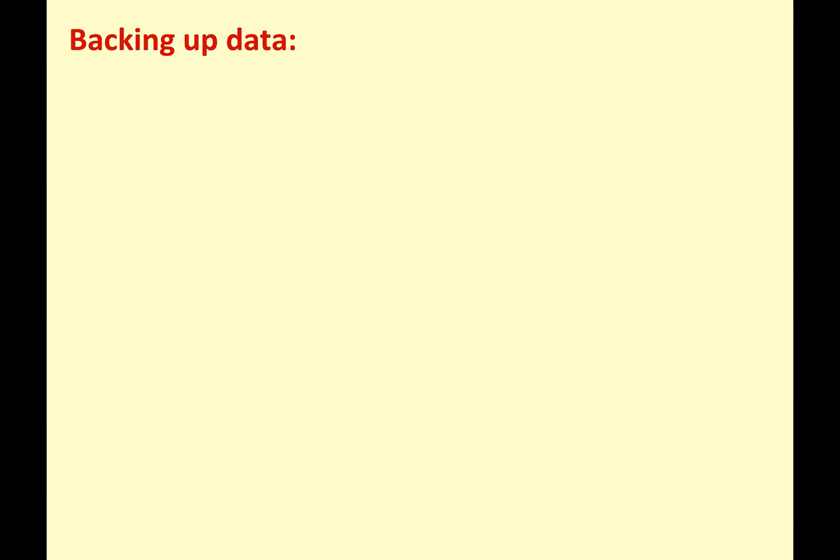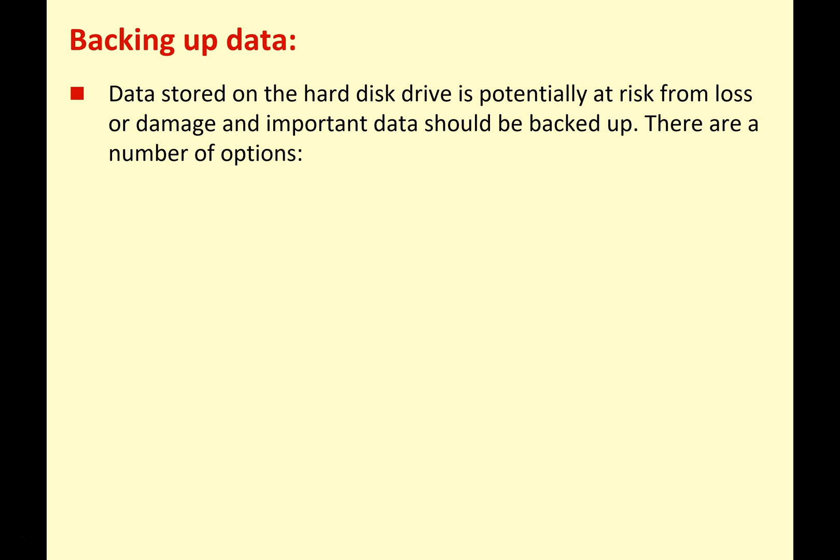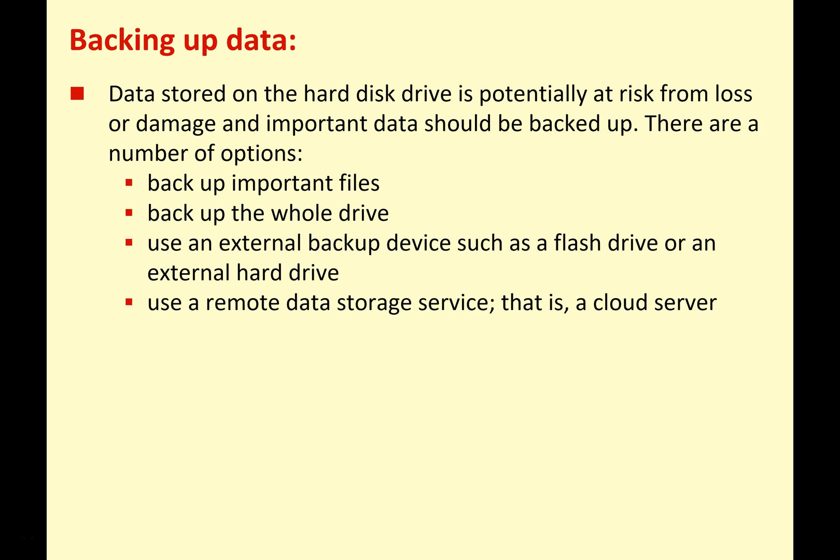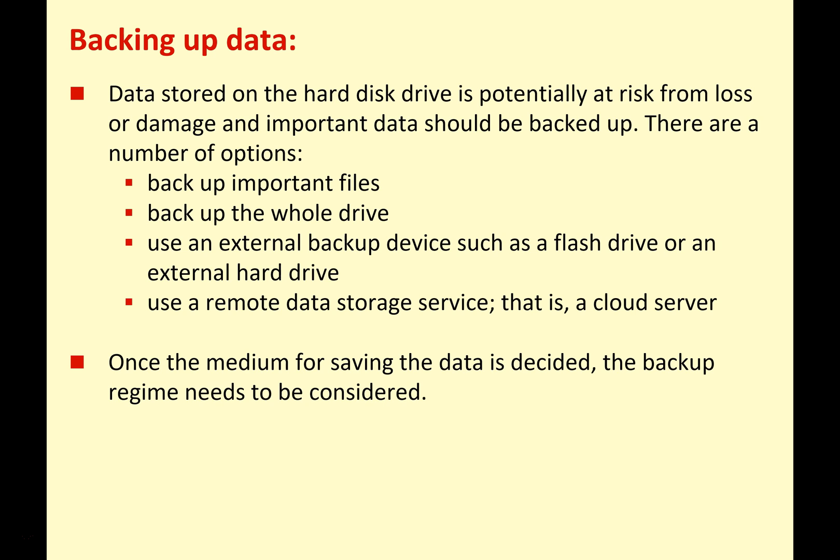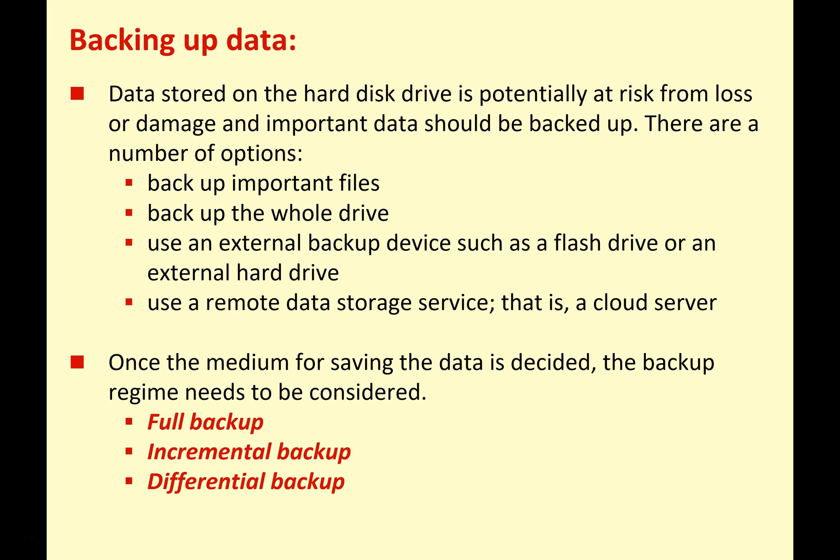To finish off, we'll look briefly at backing up data, because this is really important. Data stored on your hard drive or any other secondary storage is potentially at risk from loss or damage, and important data needs to be backed up — you must make a copy of it. Options include backing up important files or a whole drive, using an external backup device such as a flash drive or external hard drive, or using remote data storage like a cloud server. Once the backup medium is decided, the backup regime — full, incremental, or differential — needs to be considered.